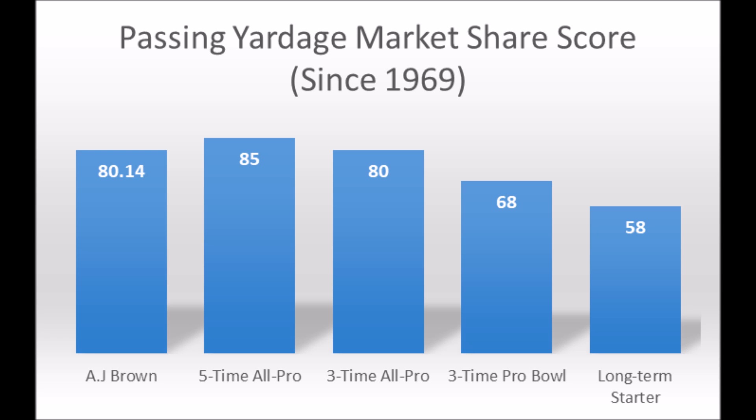Every year you find players where you're like, 'Come on, just have that one year where you leave doubters to shame.' Not every player has that year, but no matter what happens, AJ Brown already has very good production data. Even if he got injured or had a down year, he still has very good numbers to fall back on.